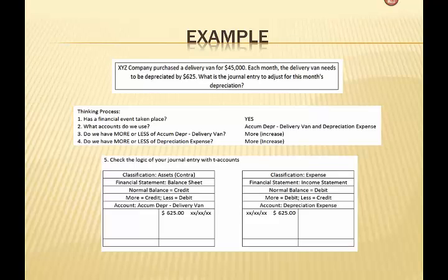So now let's check our logic. Our journal entry would be a credit to accumulated depreciation — delivery van. The reason for that is that we are using a contra asset account, which I talked about in a contra accounts video, and that contra account has a normal balance of a credit. So in order to have more of the accumulated depreciation for the van, we would have to credit that account. And we will debit depreciation expense. As an expense classification, its normal balance is a debit, so to have more of an expense, we would debit that. The logic works.